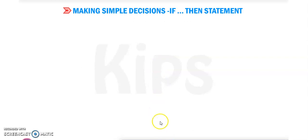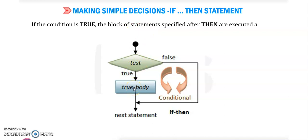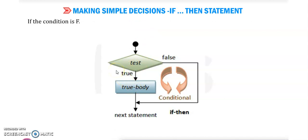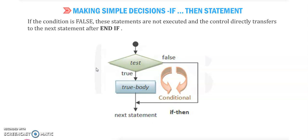The syntax is: if, then, after that write the condition, then write the statement, and at the end write end if. If the condition is true, the block of statements specified after 'then' will be executed. If the condition is false, then statements are not executed and the control directly transfers to the next statement after end if.